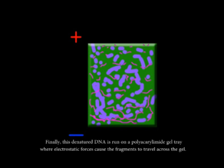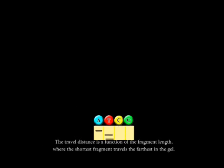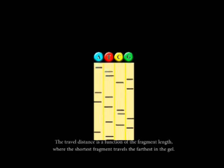Finally, this denatured DNA is run on a polyacrylamide gel tray, where electrostatic forces cause the fragments to travel across the gel. The travel distance is a function of the fragment length, where the shortest fragment travels the farthest in the gel.